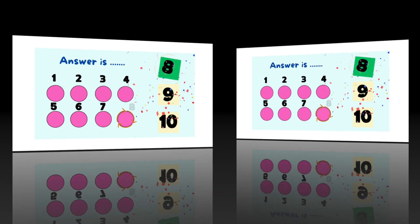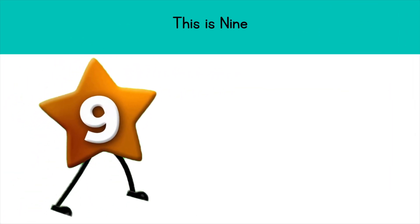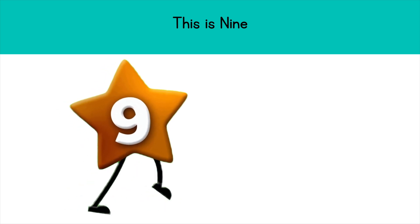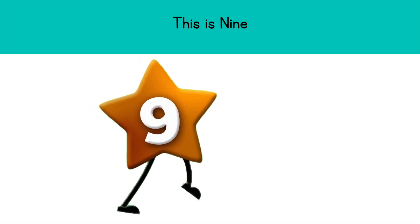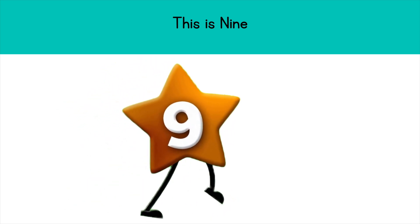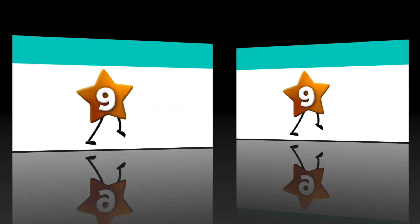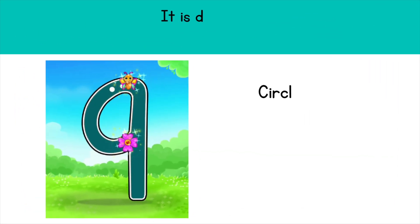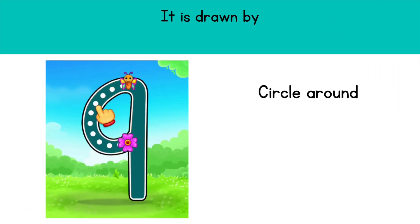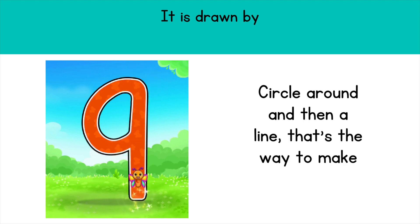This is nine. It is drawn by circling around and then a line down. That's the way to make a nine.